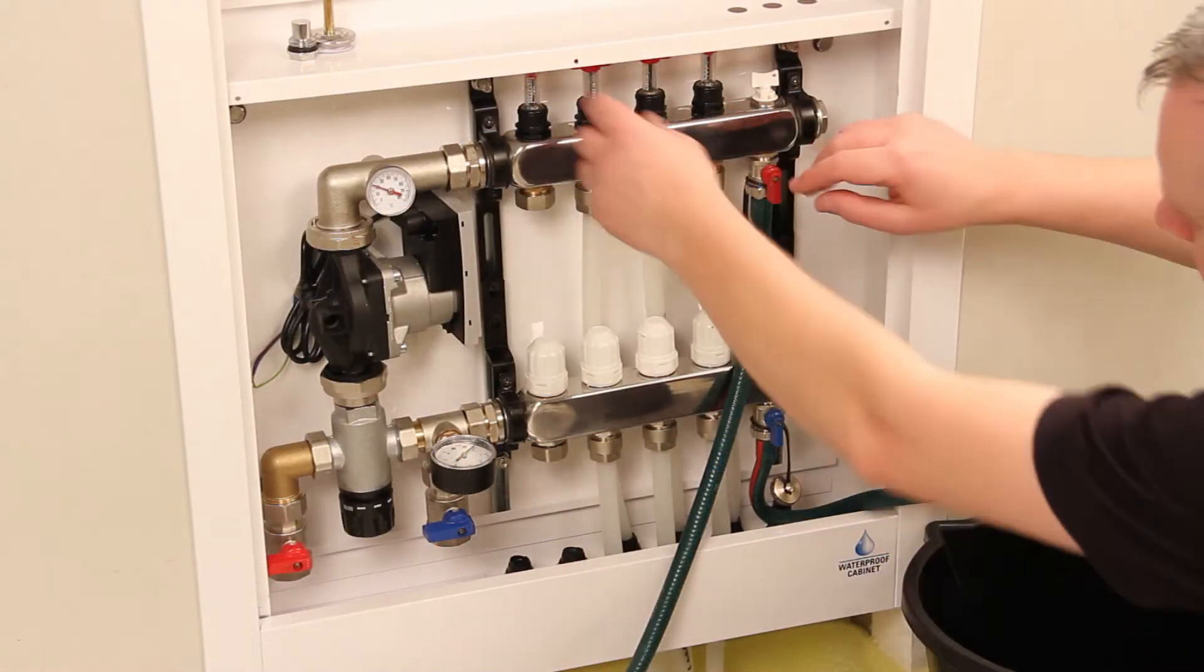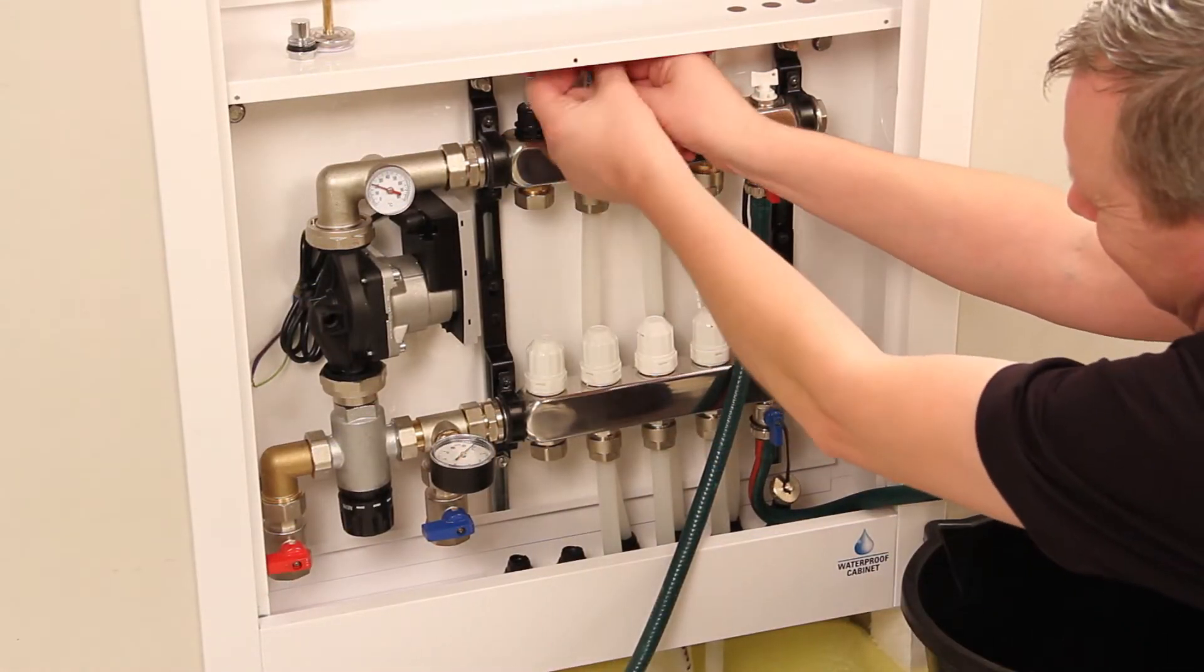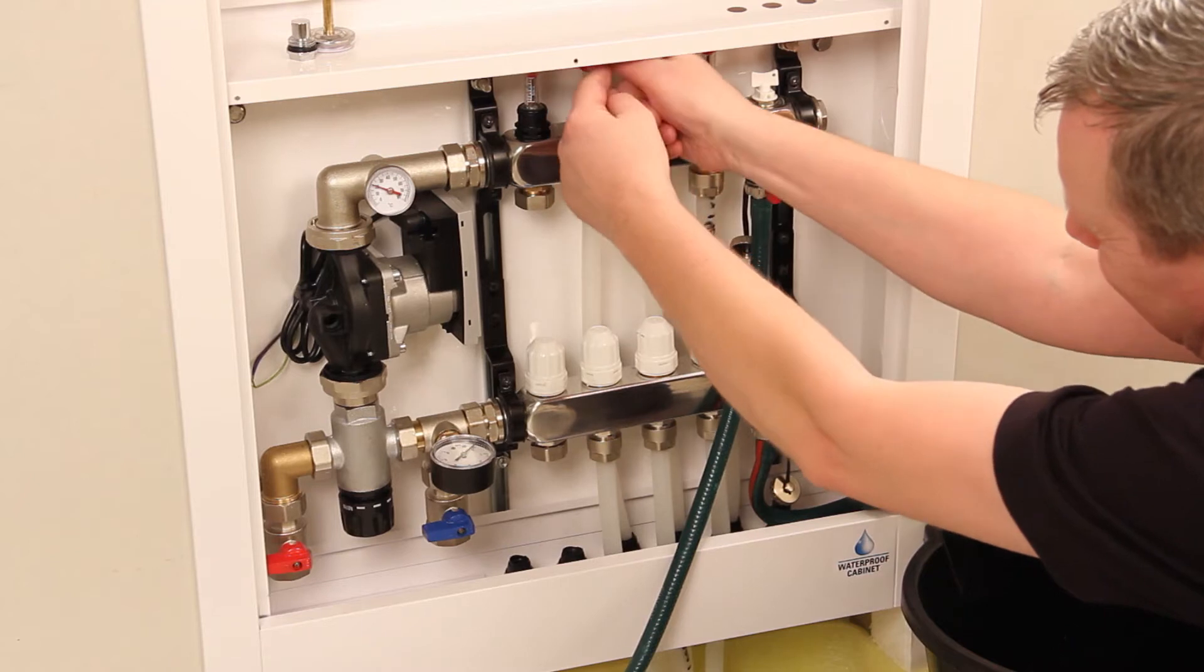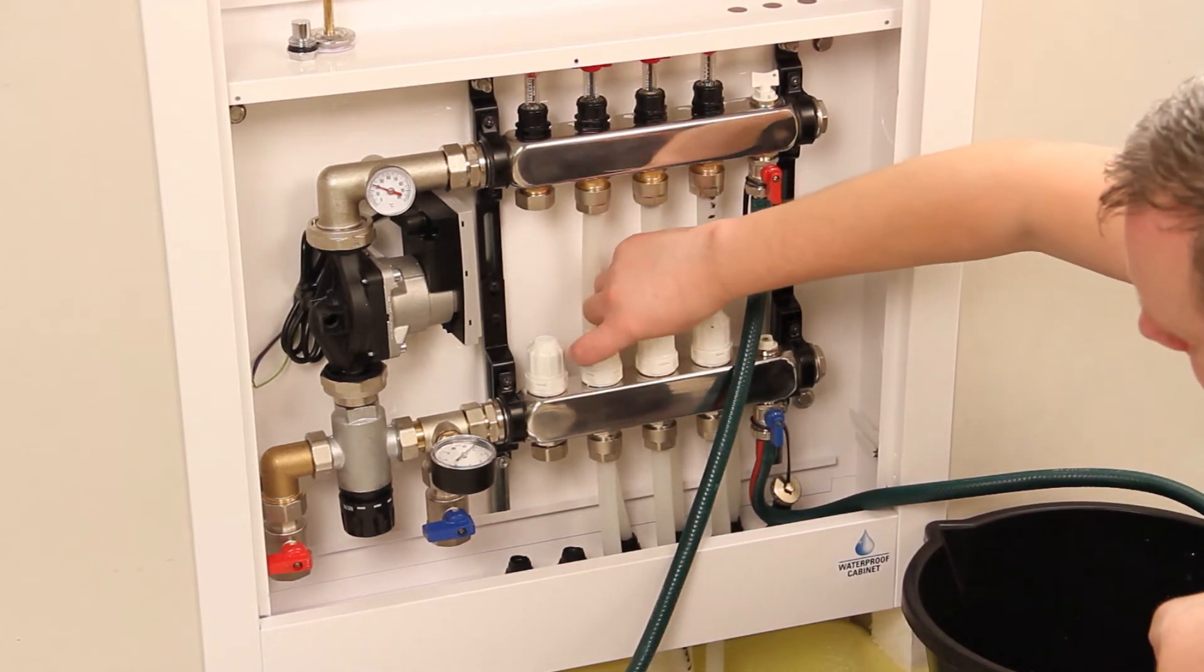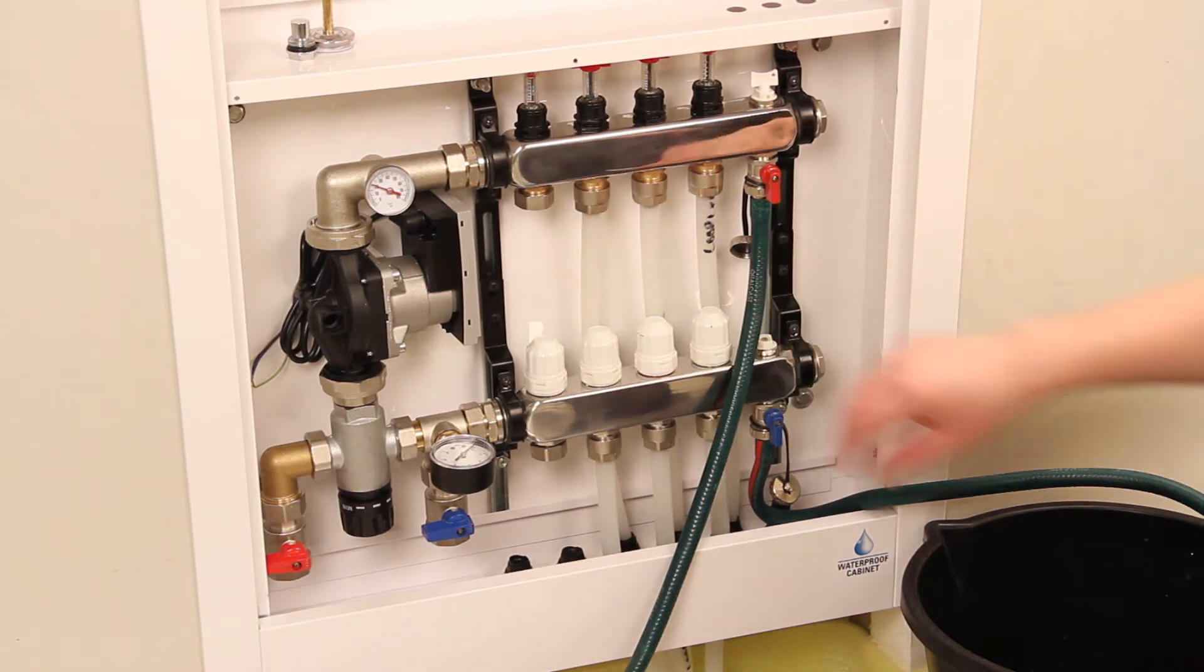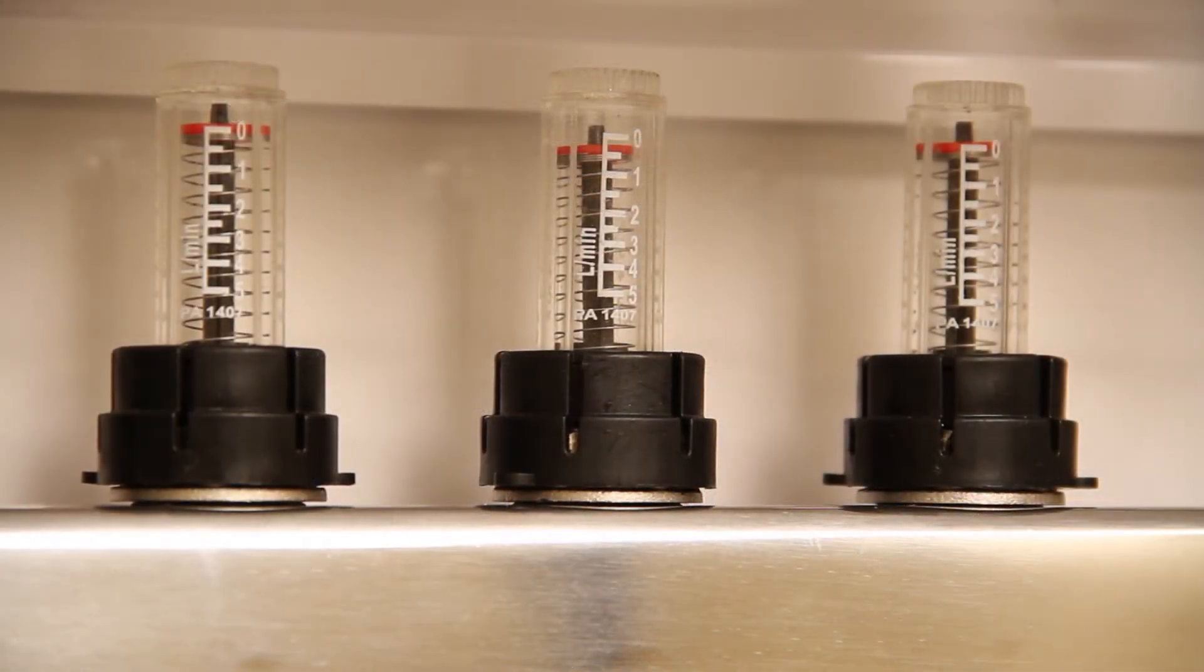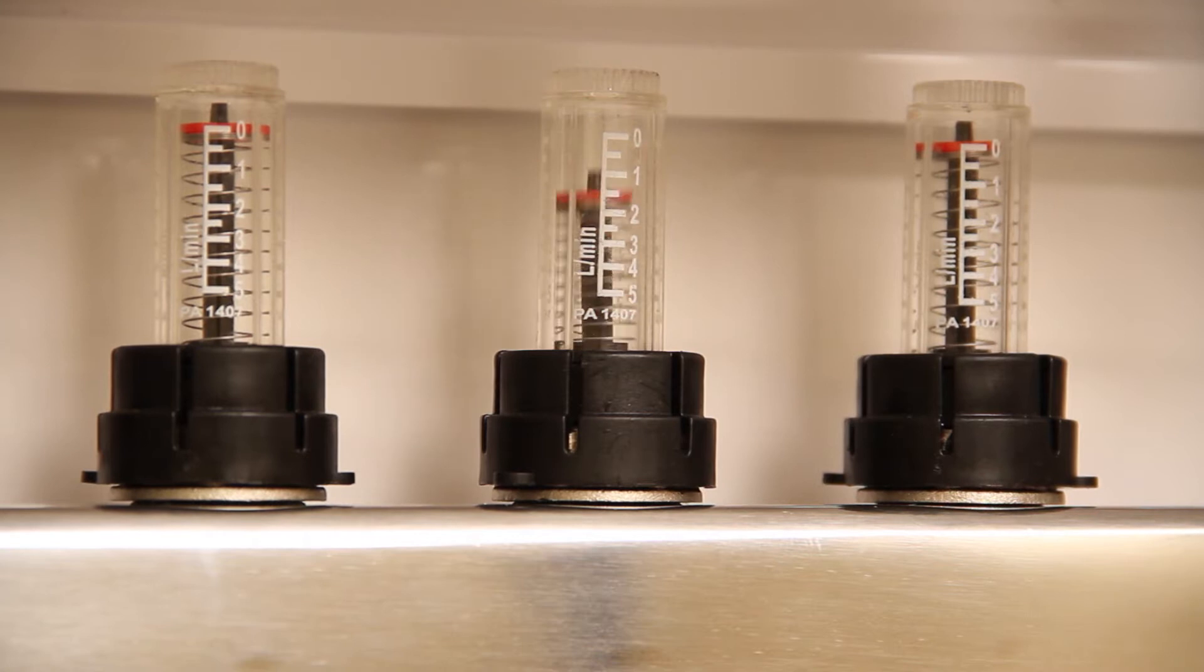Open the first flow gauge by hand a couple of turns from closed, don't force the flow gauge past the point where it becomes tight to turn. Open the corresponding manual return valve directly below the open flow gauge. Water will now start to flow through the open circuit and the flow gauge will register a flow.